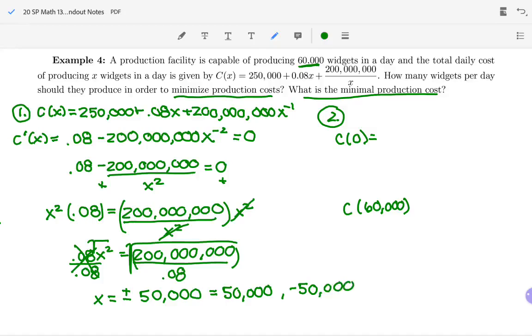Do we have to test both of these? No. Negative 50,000 is not on our interval of interest. Even if that minimizes their production costs, you can't produce negative 50,000 of something. So this is not on our interval. Which is awesome. That means we only have to plug in positive 50,000 because it's within our interval of interest.